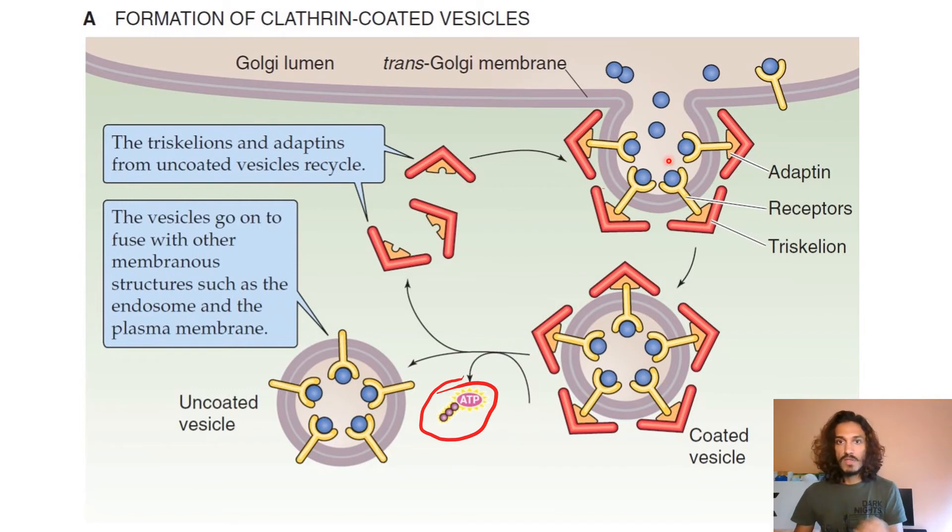That needs ATP. The whole clathrin cage forming and internalization, everything is favorable. You just need GTP hydrolysis to activate your dynamin. Apart from that, to uncoat it you need your ATP. Like that, the triskelion part is gone.